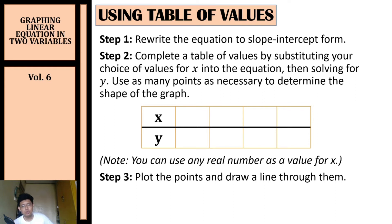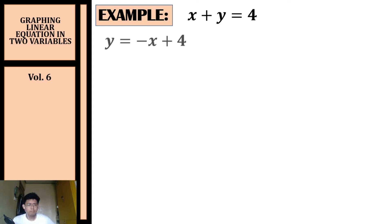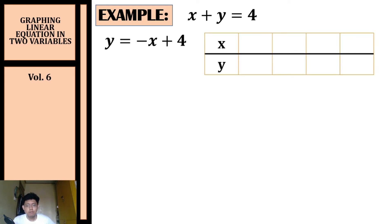Now let's have some examples in graphing linear equations in two variables using table of values. For our first example, we're going to graph the equation x plus y equals four. Step one is to rewrite it in slope-intercept form, which gives us y equals negative x plus four.